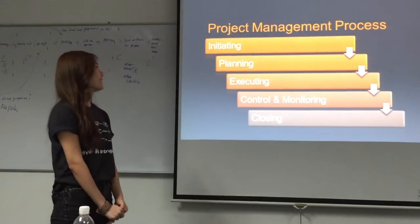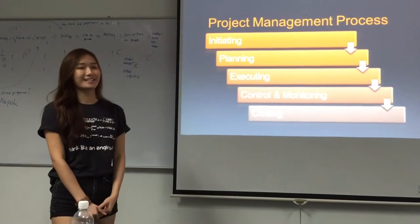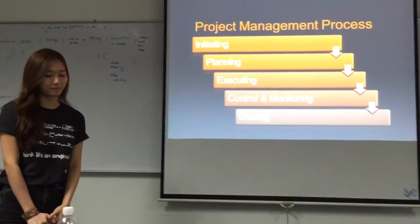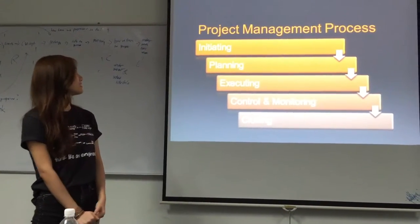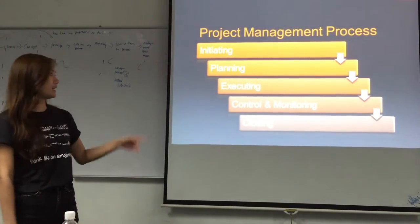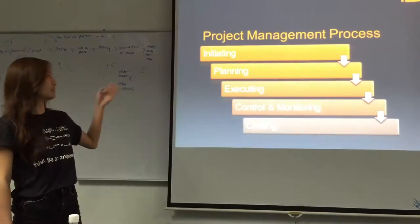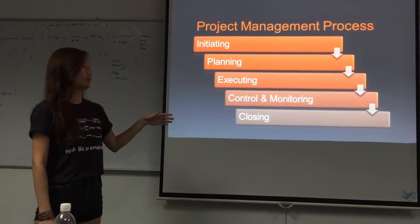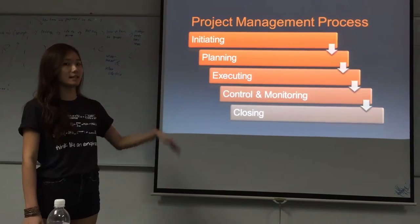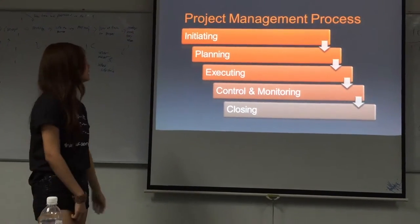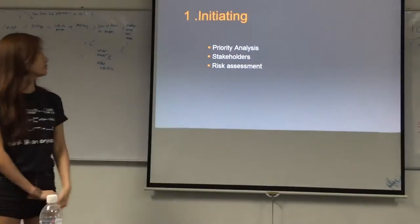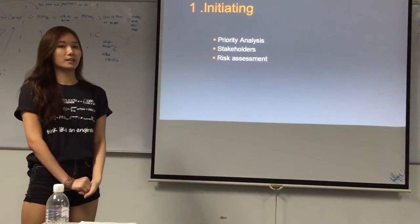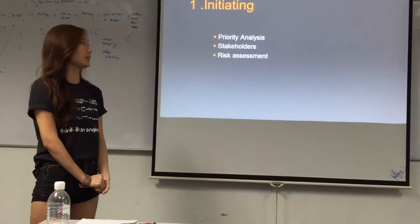The project management process consists of five processes: initiating, planning, executing, control and monitoring, and lastly closing. The first process is initiating.